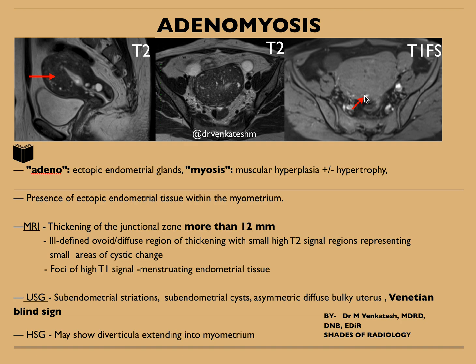The T1 fat sat image shows hyperintense foci. On ultrasound, various features may be seen: subendometrial striations, subendometrial cysts, asymmetric diffuse bulky uterus — similar to what we see on MRI — and the Venetian blind sign, which shows alternating hyper- and hypoechoic shadows posterior to the myometrium. HSG may show diverticula extending into the myometrium from the endometrial cavity.